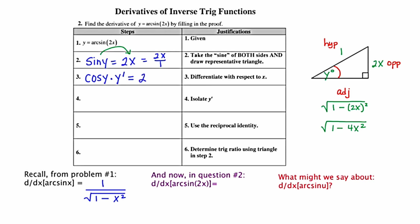In step 4, we're told to isolate y prime. That gives us y prime equals 2 over cosine y. Using the reciprocal identity, we can rewrite this as y prime equals 2 secant y. And now, if we refer back to our representative triangle off to the side, we can come up with an algebraic ratio, y prime is going to equal 2 times our expression for secant, which is hypotenuse over adjacent, or 1 over the square root of 1 minus 4x squared.